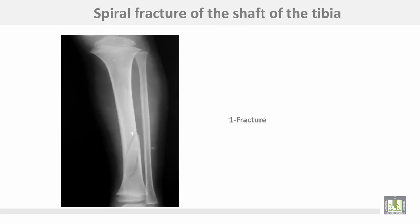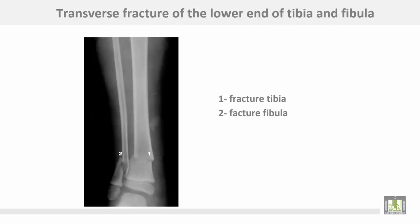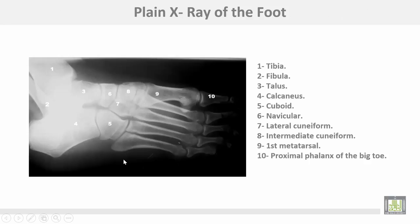This is a spiral fracture of the shaft of the tibia. This is a transverse fracture of the lower end of the tibia and the fibula — transverse fracture here in the tibia, and this is the lower end of the fibula.